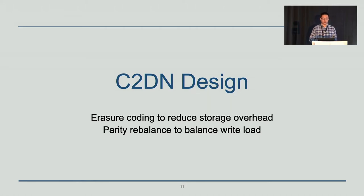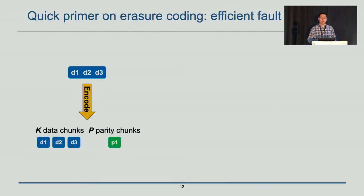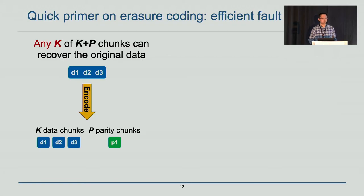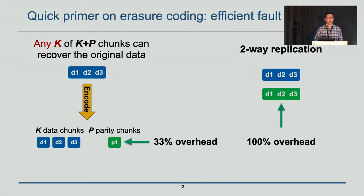In today's talk I'm going to focus on two techniques. The first one is called erasure coding. Let's have a quick primer: erasure coding is a storage-efficient way to provide fault tolerance. We encode an object into K data chunks and calculate P parity chunks. With any K out of these K+P chunks, we can recover the original data. For example, with three data chunks we have the original data; with two data chunks and one parity chunk we can recover the data. This approach tolerates P unavailability, and in this case P equals one, coming with an overhead of 33%. In order to tolerate one unavailability using replication, we need two-way replication, which comes with a storage overhead of 100% — significantly higher than erasure coding.